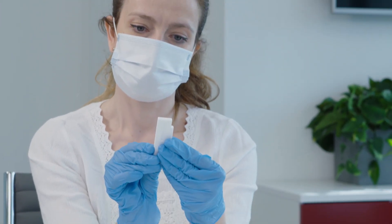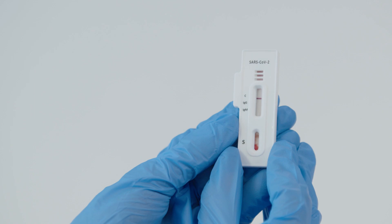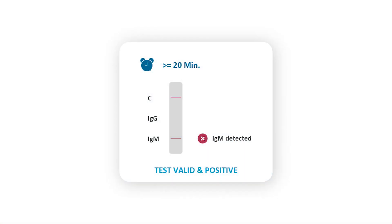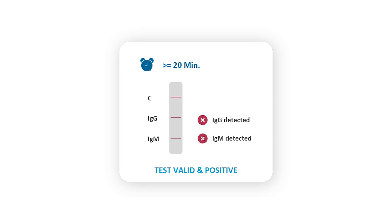After 20 minutes, a purplish-red line at the IgM line indicates the presence of IgM antibodies, suggesting an early infection phase of SARS-CoV-2. A purplish-red line only at the IgG line indicates a later-stage or past infection. Lines at both IgM and IgG may indicate a later-stage but still active infection. Even a faint line at either IgM or IgG indicates that an infection with SARS-CoV-2 has taken place.